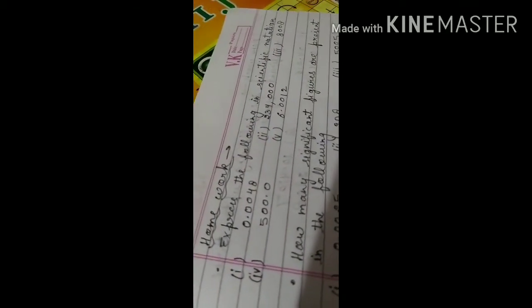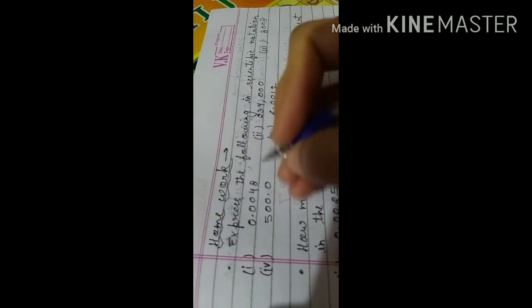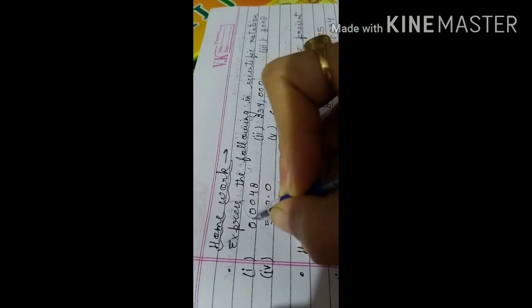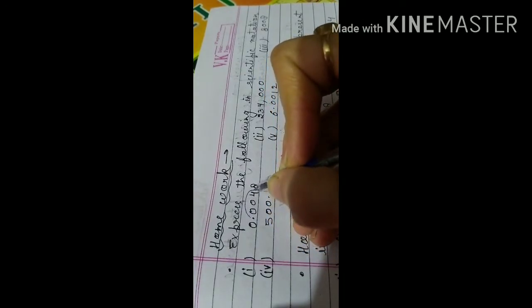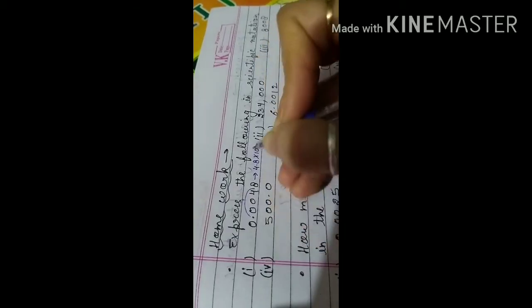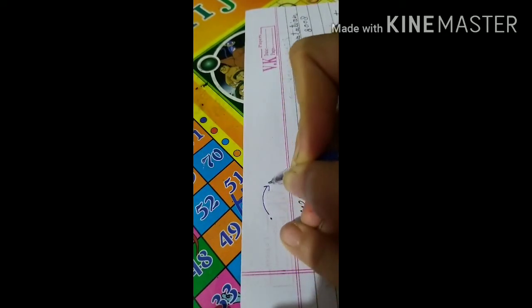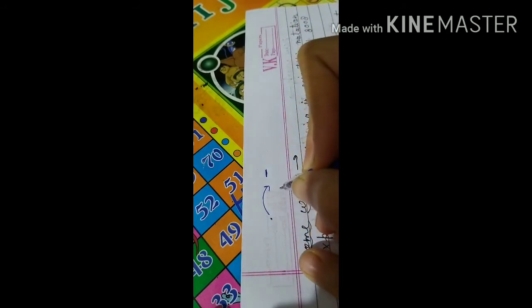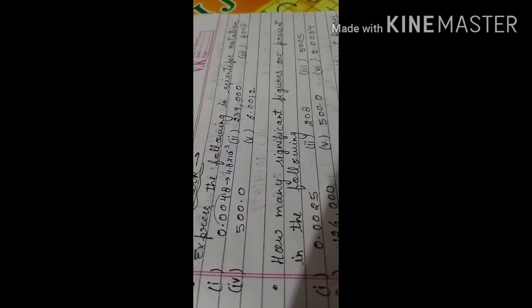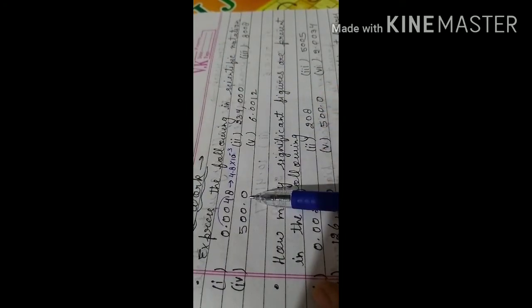I have written a few questions for homework. The first question: express the following numbers in scientific notation. You have to convert them by bringing the decimal after one digit. For example, 0.0048 becomes 4.8 × 10⁻³. If you transfer the decimal from left to right, the power is negative; from right to left, the power is positive.